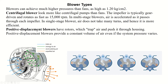The second type is positive displacement blowers. It has two rotors inside the casing. When the rotors rotate, they trap air within their lobes and this trapped air is then pushed out at the outlet at high velocity and pressure. Air enters at the top and leaves the blower at the bottom.